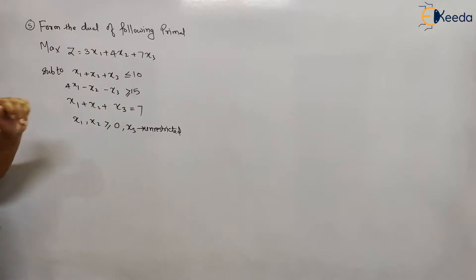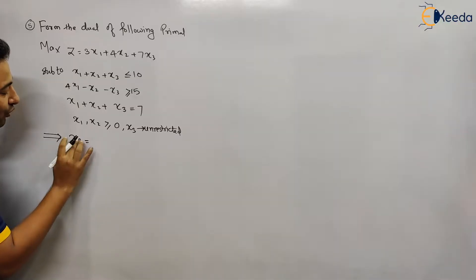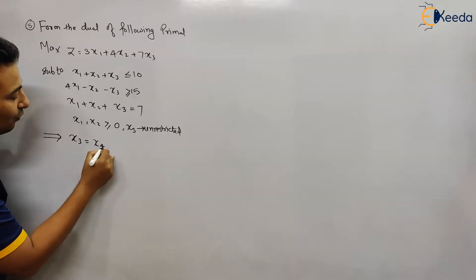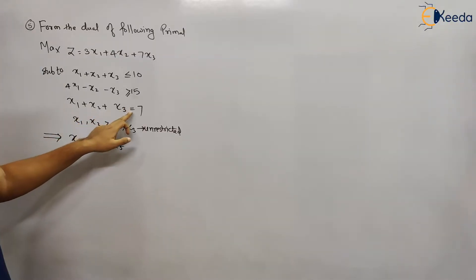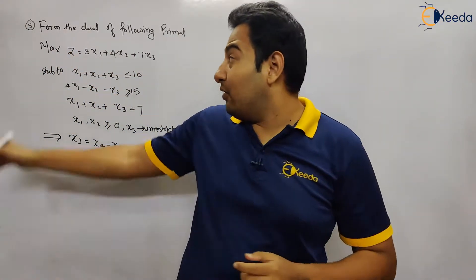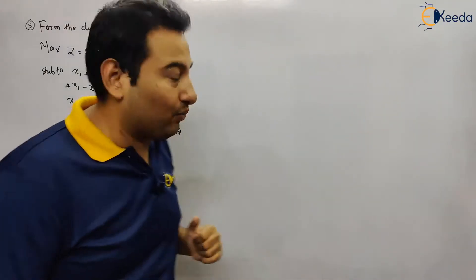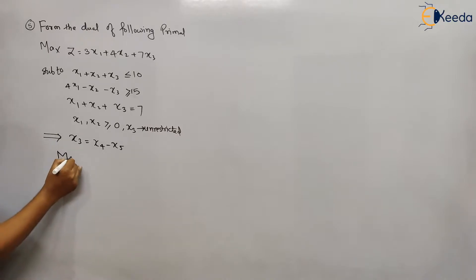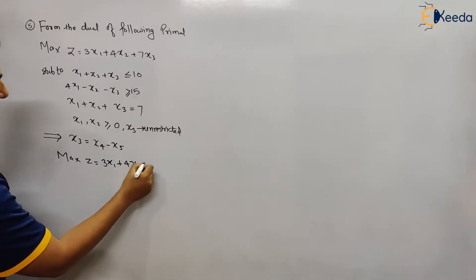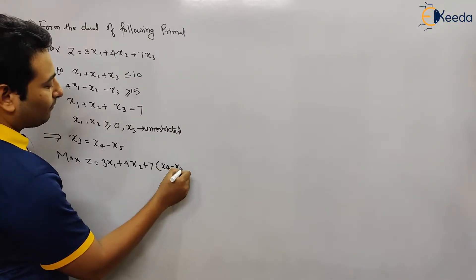Here, equal-to is given and unrestricted is given. Since x3 is unrestricted, you need to replace x3 with x4 minus x5 (since x1 and x2 are already used). Also, equal-to constraints need to be converted into less-than-equal-to and greater-than-equal-to. Since it is a maximization problem, we'll first take less-than-equal-to then greater-than-equal-to. So maximize Z equals 3x1 plus 4x2 plus 7x3, and x3 will be written as x4 minus x5.